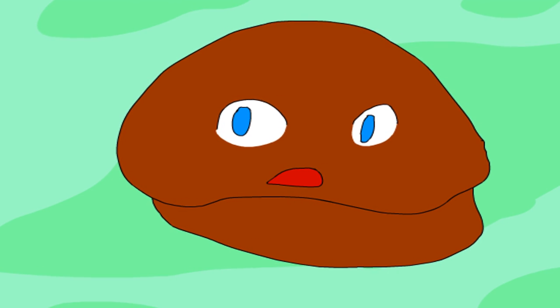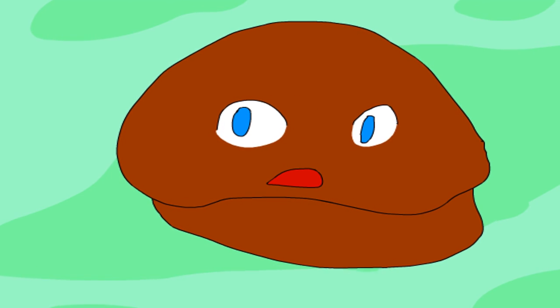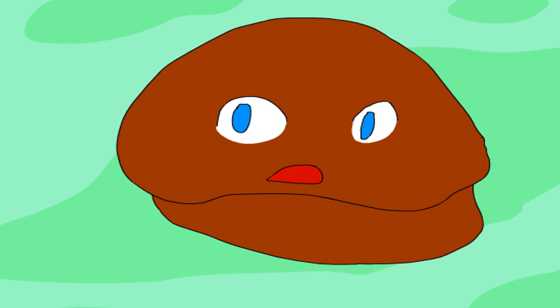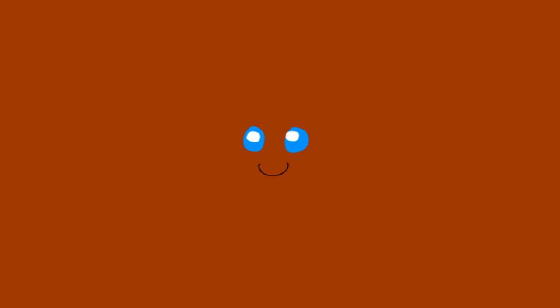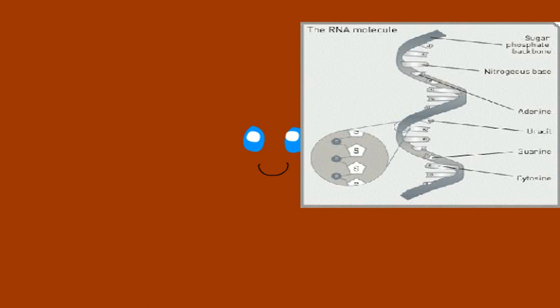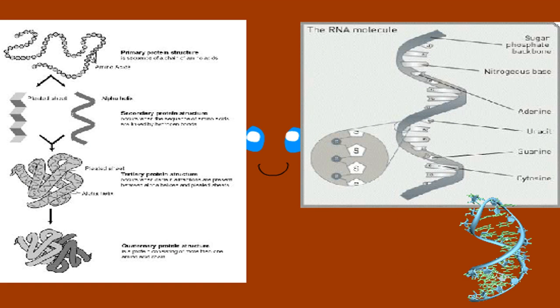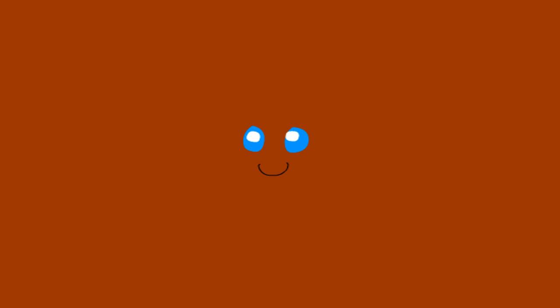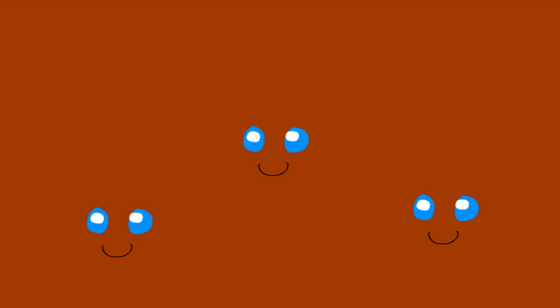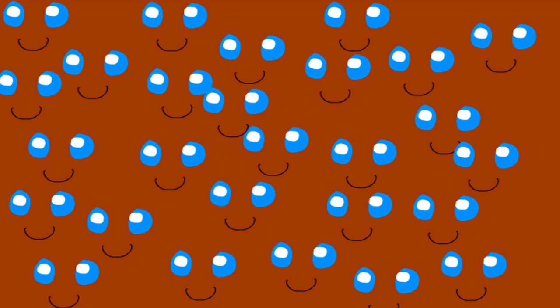I told you, you're in a eukaryote cell at the moment. I'm Rayna the ribosome. Ribosomes are cell organelles that consist of RNA and proteins. We are responsible for assembling the proteins of the cell. Depending on the protein production level of a particular cell, we may number in the millions.